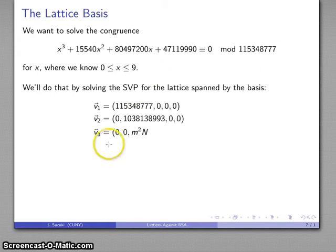Third vector, we can think about this as constant coefficient, linear coefficient, square coefficient. So that's going to be m squared, maximum squared times our modulus, with zeros in the remaining positions.